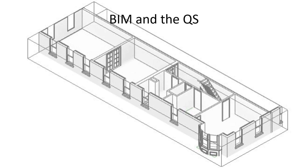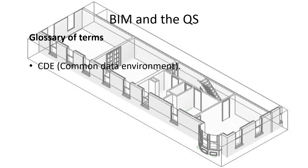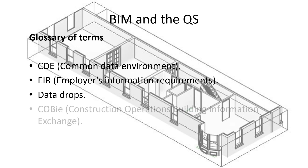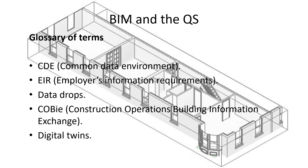BIM has its own terminology, some of which are listed here. A lot of the terms and tools relate to establishing meaningful collaboration between all parties using common data and common goals. That really is the essence of BIM — collaboration. Difficult to achieve in an industry that traditionally has had a silo-based approach and a structure where 95% of contractors are medium or small. Many of the processes are linked to the RIBA Plan of Work 2020 to ensure information is transferred effectively from stage to stage.